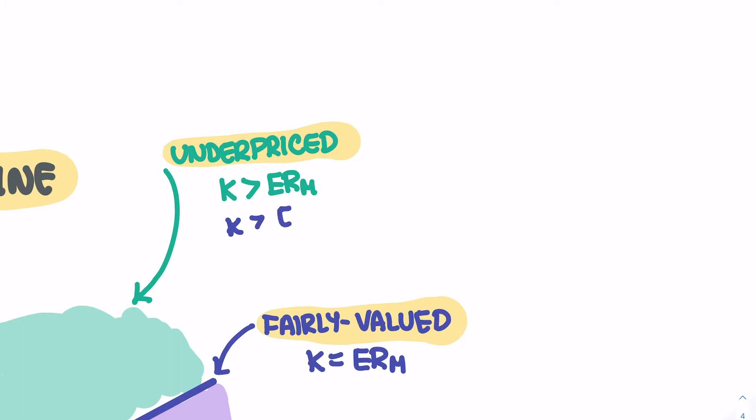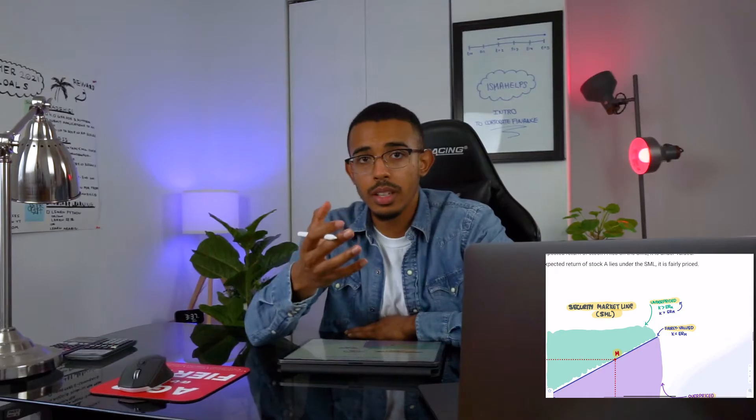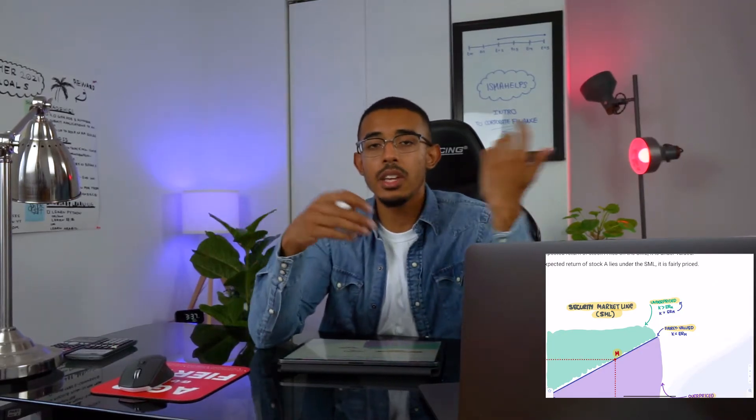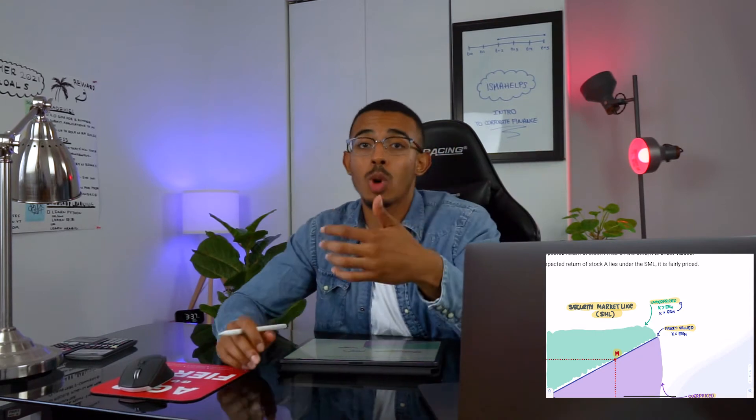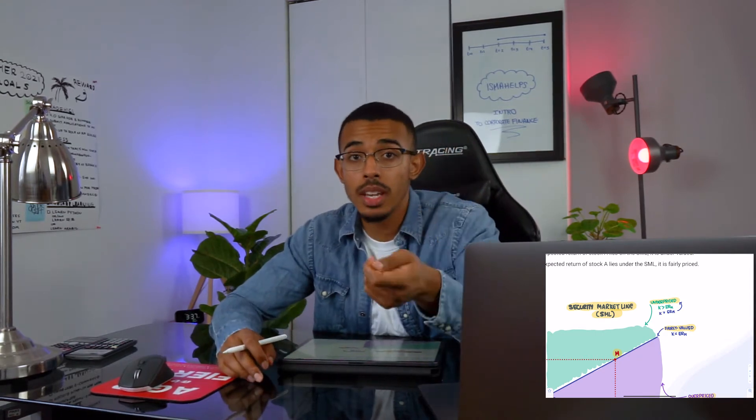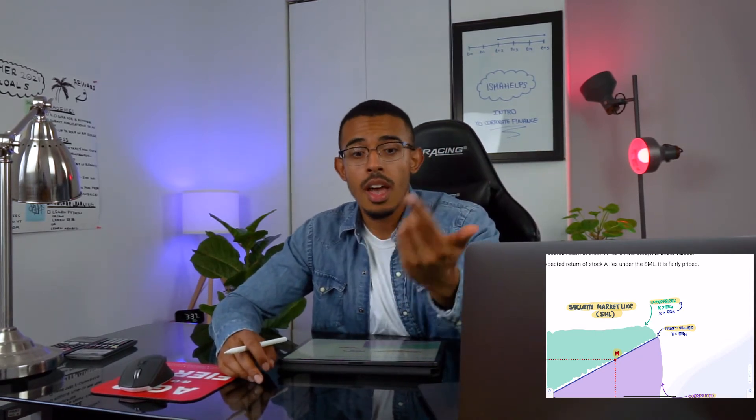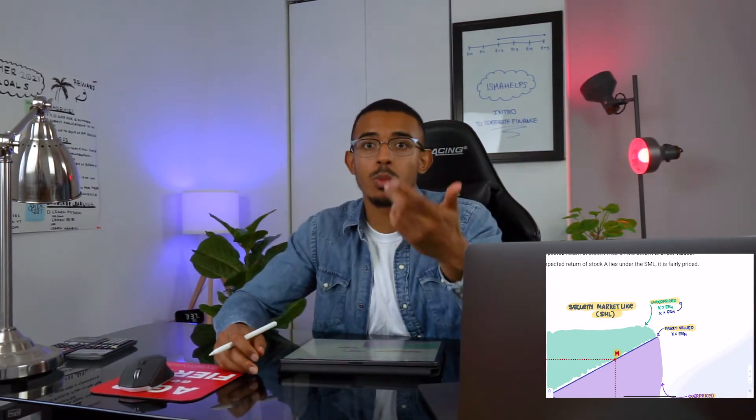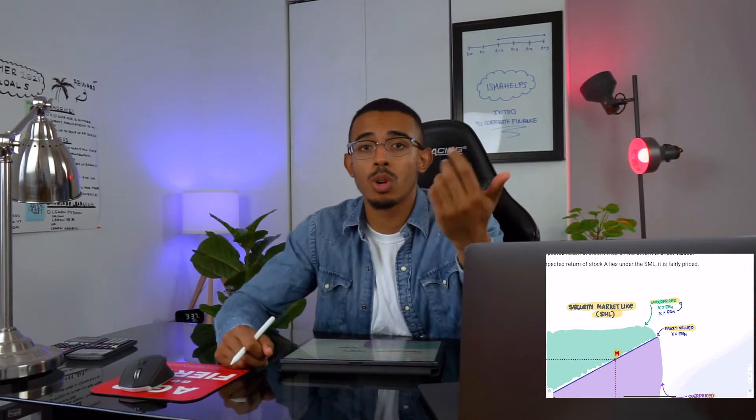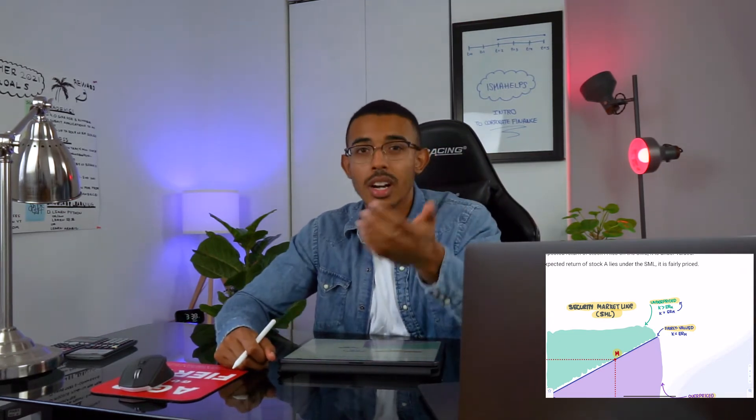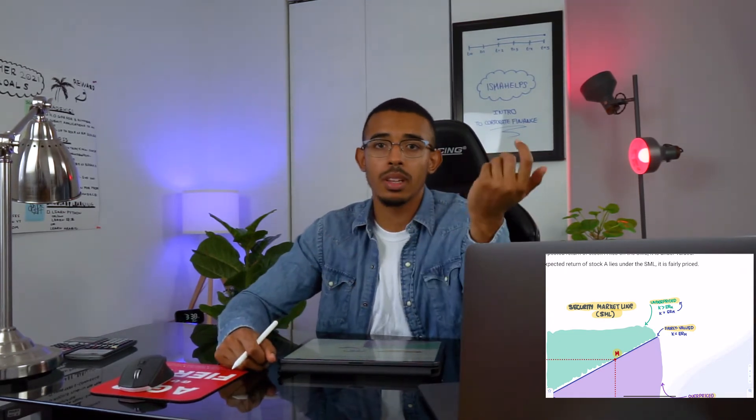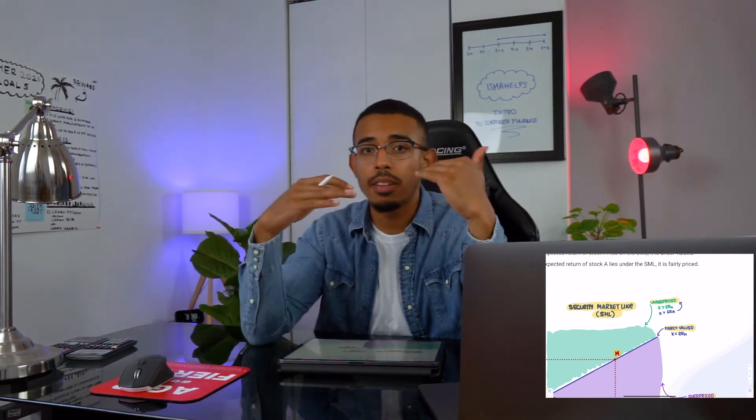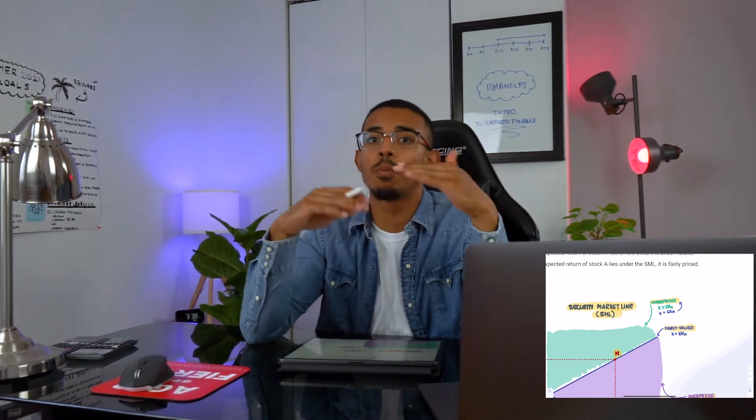In this case, if K is bigger than the expected return of the market, then we know that it's underpriced. The reason it's underpriced is that if you could get much more returns, much more money on a placement or position, and nobody's actually getting to that idea, that would mean you're getting much more money than you deserve. You're getting much more for your buck, and that would mean the stock is actually underpriced.